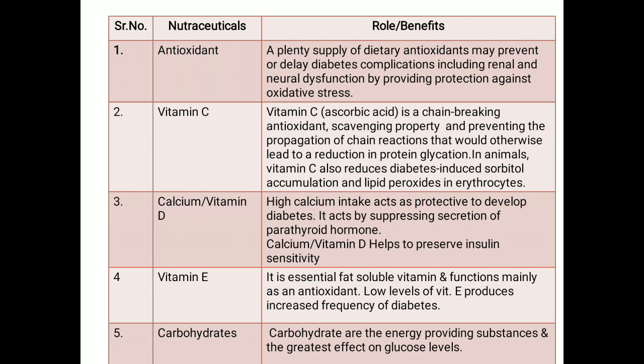Vitamin C, also known as ascorbic acid, acts as a chain-breaking antioxidant with scavenging properties and prevents the propagation of chain reactions that could lead to reduction in protein glycation. The main role of vitamin C is to prevent or reduce protein glycation, thereby reducing glucose levels. In animals, vitamin C also reduces diabetes-induced sorbitol accumulation and lipid peroxides in erythrocytes.